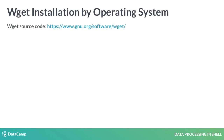The official documentation and source code for wget is listed, but unless you are comfortable compiling from the source code, here are some easier alternatives. For Linux users, it is likely wget is already installed for you. If not, run sudo apt-get install wget on the command line.